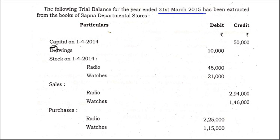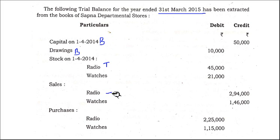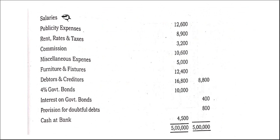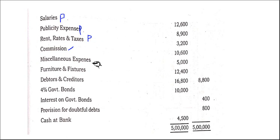They have given opening capital and drawings — these are used in the balance sheet. Opening stock is used in the trading account. Sales and purchases go into the trading account for two departments. Salaries, publicity expenses, rent rates and taxes, commission, and miscellaneous expenses all go into the profit and loss account.